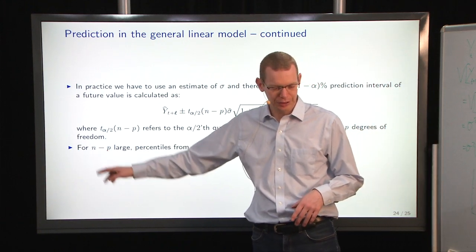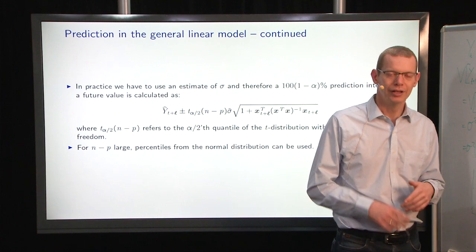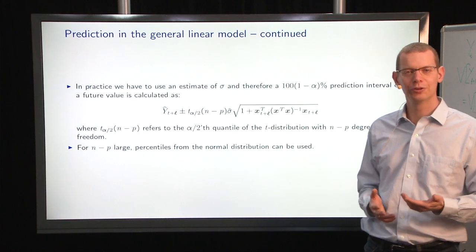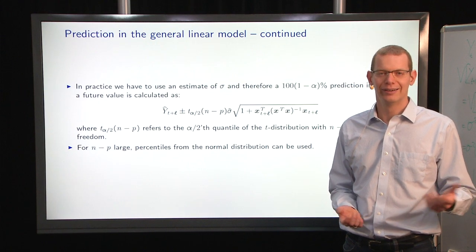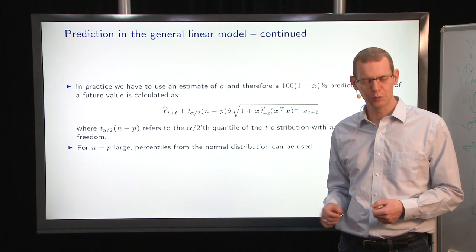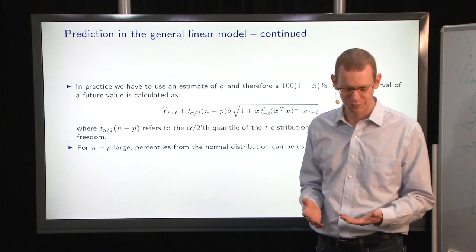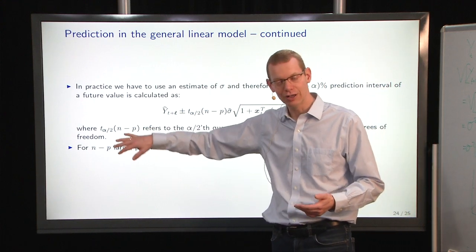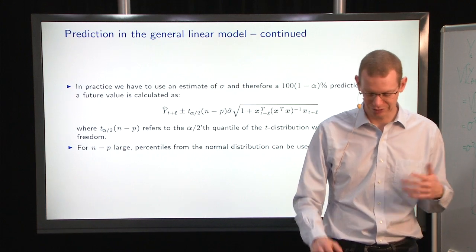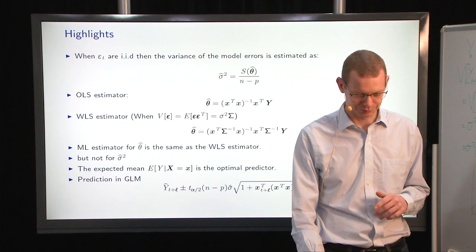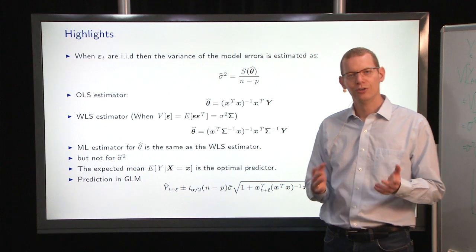And then you can say, when n minus p is sufficiently large, then you can start using the normal distribution instead, if you like. But on the other hand, nowadays, it's so easy to look up in t-distribution, so why not just always do that? Except that n is very large. You need to get up to at least 100 or so, then you can say the difference is marginal.